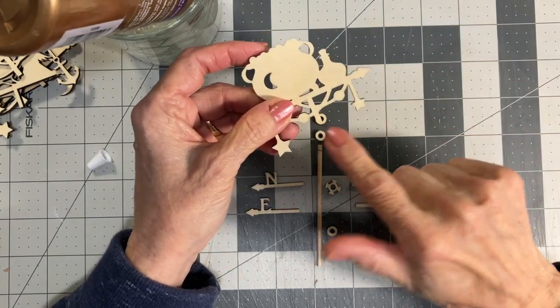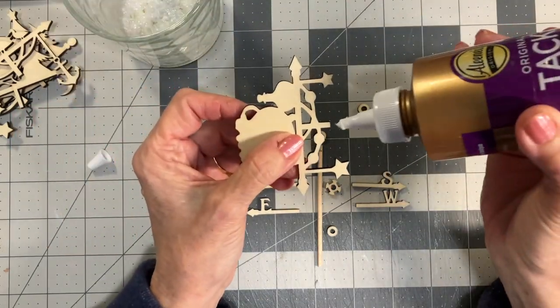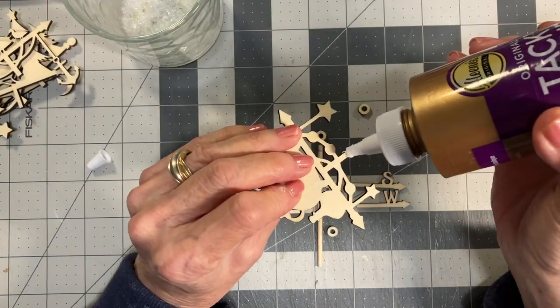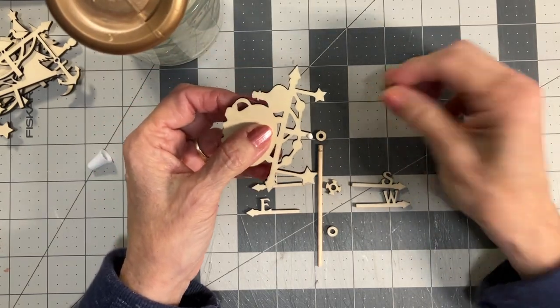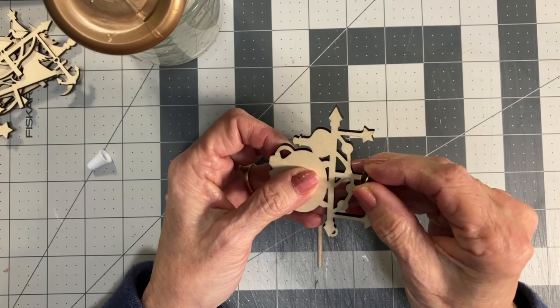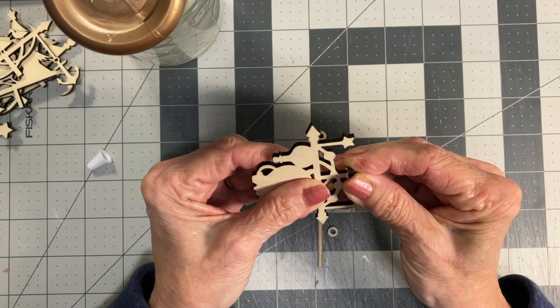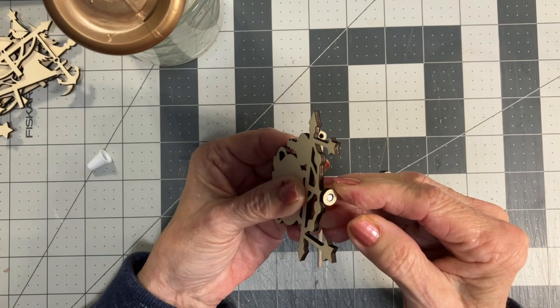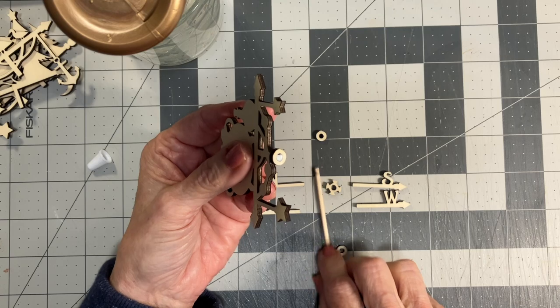What you want to do is take one of the circles and glue it to the bottom post. You only want to glue it about halfway in, not all the way in. Then be sure to remove some of the glue from the bottom.